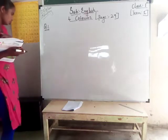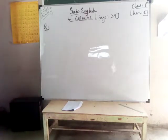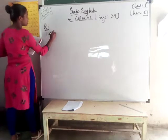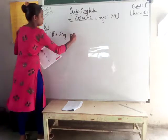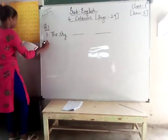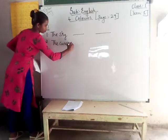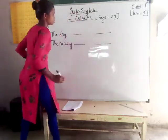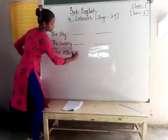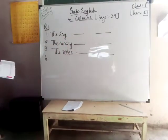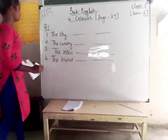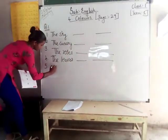Canary is yellow, and the mango colour is also yellow. Take out your pencil. Question number 1: first, the sky — dash, dash. Second, the canary — dash, dash. Third, the roses. Fourth, the leaves. Fifth, the hills.